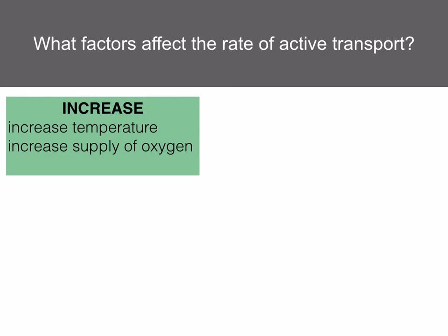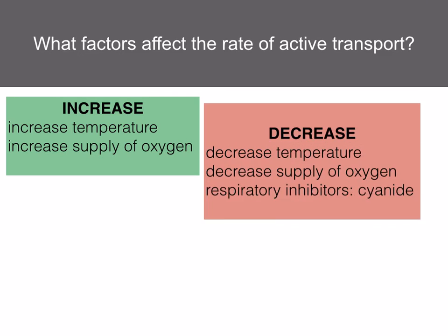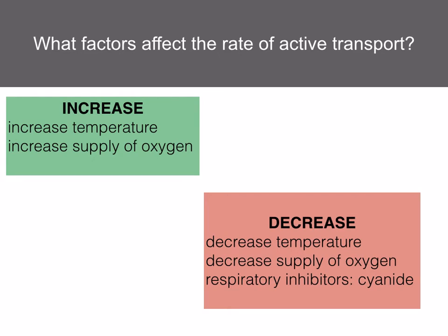What factors affect the rate of active transport? Any factor that affects the respiratory rate will have an effect on active transport. An increase in temperature or supply of oxygen will increase the rate of active transport. A decrease in temperature, decrease in the supply of oxygen, and respiratory inhibitors such as cyanide will inhibit active transport.